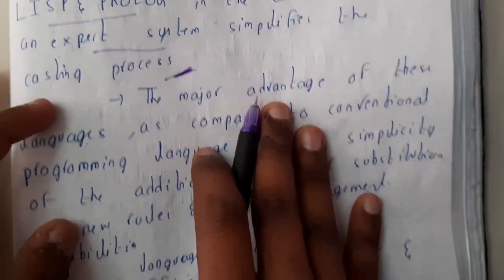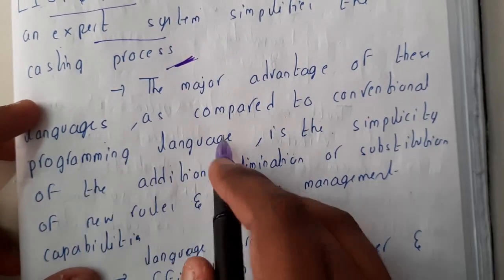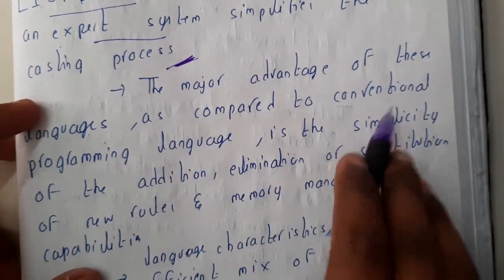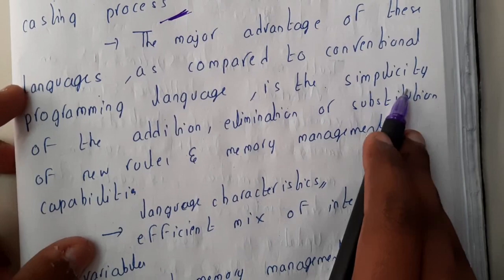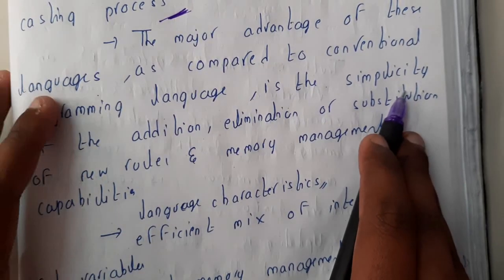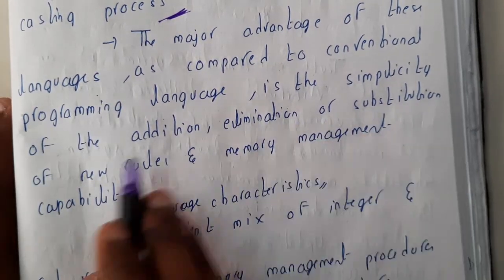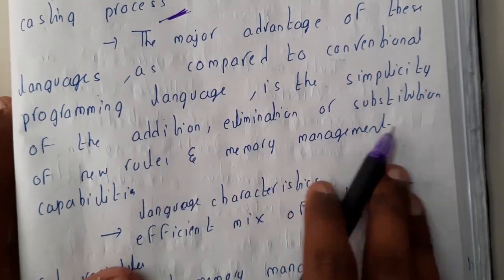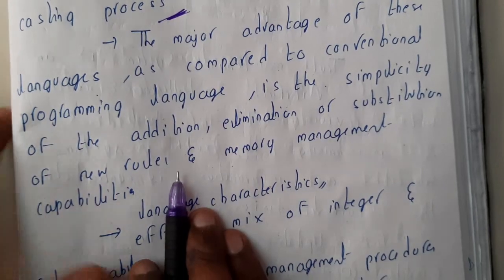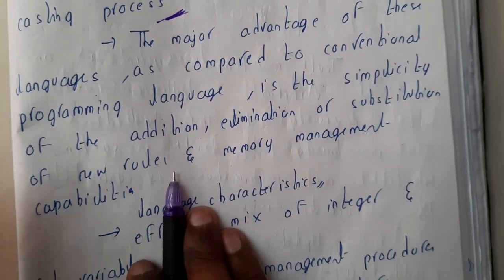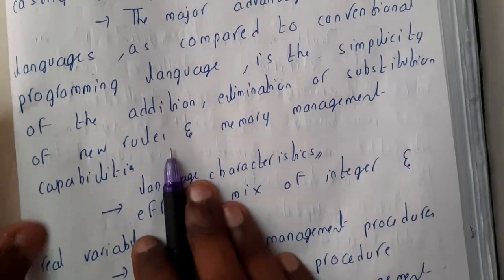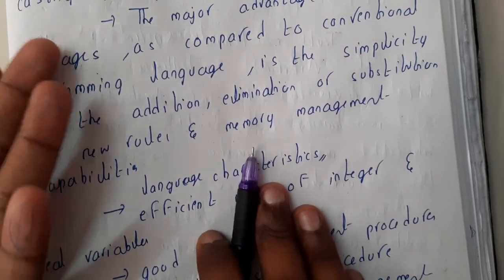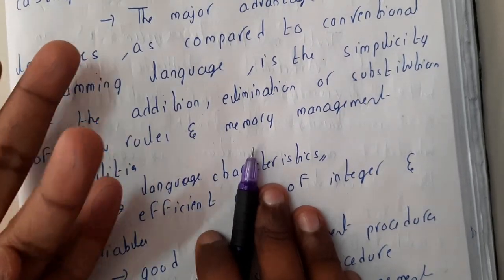The major advantage of these languages as compared to conventional programming languages is simplicity. These languages are really simple, and the addition, elimination, or subtraction of any rule and the memory management capacity of these languages is really high and efficient. That is the reason why even today LISP and PROLOG are really popular for artificial intelligence.